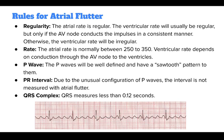For atrial flutter, the atrial rate is regular. The ventricular rate will be regular only if the AV node conducts the impulses in a consistent manner; otherwise, the ventricular rate will be irregular. The atrial rate is normally between 250 to 350. Ventricular rate depends on conduction through the AV node to the ventricles. The P waves will be well defined and have a sawtooth pattern. Due to the unusual configuration of P waves, the PR interval is not measured during atrial flutter. The QRS complex will measure less than 0.12 seconds.